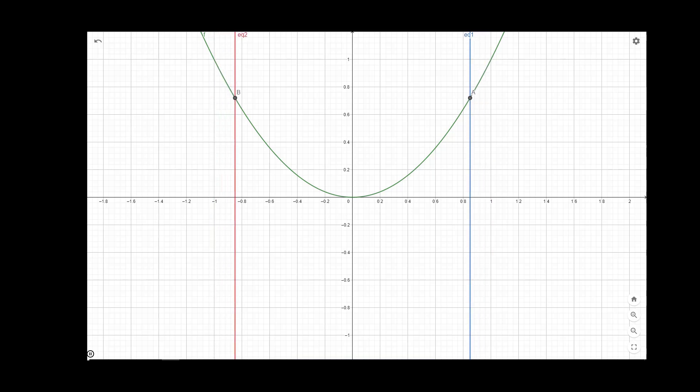Clearly, as we are approaching towards 0 from the right-hand side or left-hand side, the functional value is becoming 0. So the limit of the function at x = 0 will be 0, as you can see from this animation.